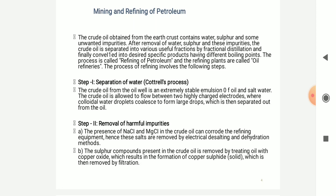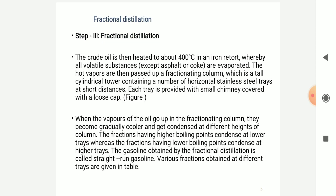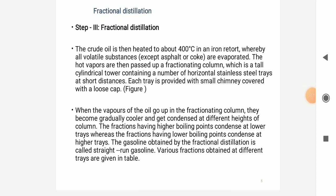The process of refining involves the following steps: the separation of water, removal of harmful impurities, and fractional distillation. In the final stage, that is in the fractional distillation, the crude oil is first heated to about 400 degrees Celsius and introduced into a retort where all the volatile substances except the coke are evaporated. Then the hot vapors are passed through the fractionating column, which is a tall cylindrical tower containing a number of horizontal stainless steel trays at short distances apart.